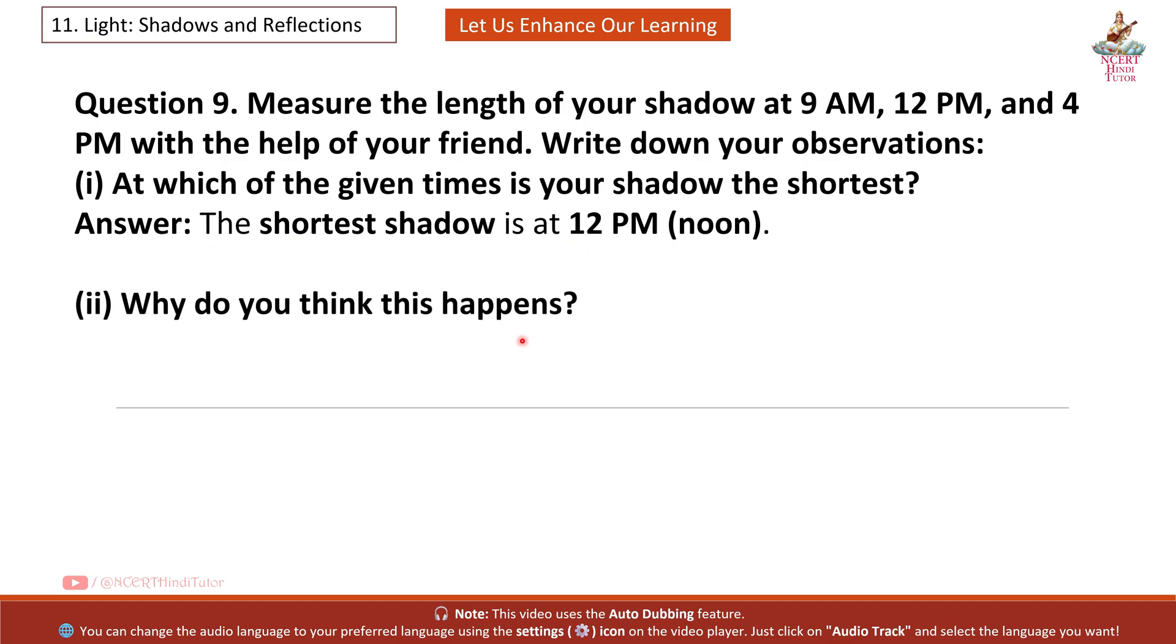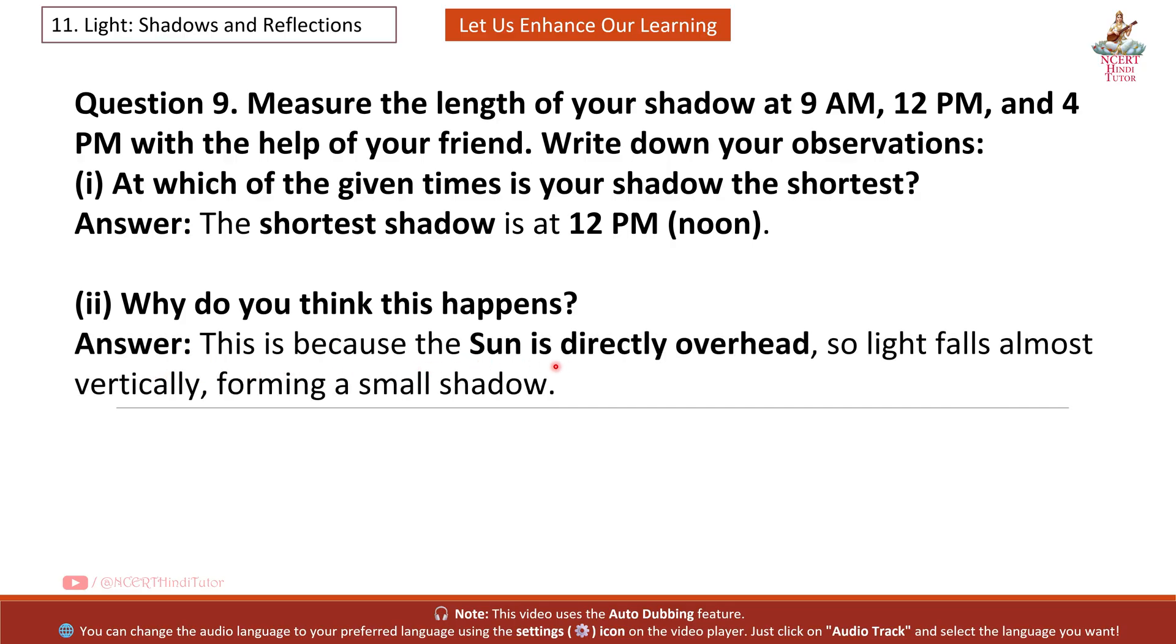Second, why do you think this happens? Answer: This is because the sun is directly overhead, so light falls almost vertically, forming a small shadow.